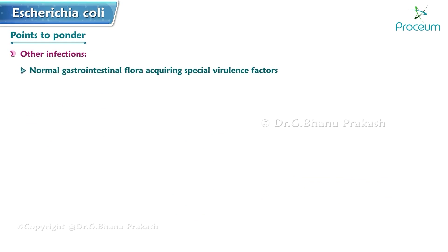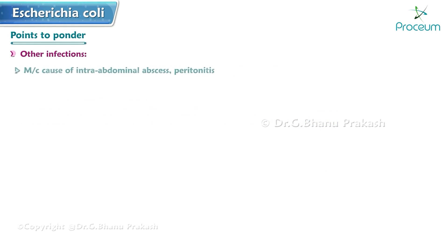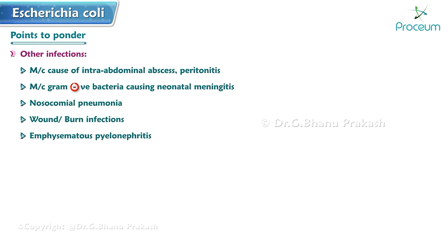Most other infections caused by E. coli are due to normal gastrointestinal flora which has acquired special virulence factors; they cause disease when they enter a normally sterile extra-intestinal site. E. coli is the most common cause of urinary tract infections in all age groups. UTI-causing E. coli are called uropathogenic E. coli (UPEC) and possess pili which help in adherence. E. coli is also the most common cause of intra-abdominal abscess and peritonitis, and the most common gram-negative bacteria to cause neonatal meningitis. It also causes nosocomial pneumonia, wound infections, burn infections, and emphysematous pyelonephritis.